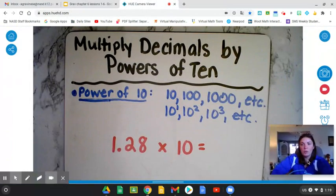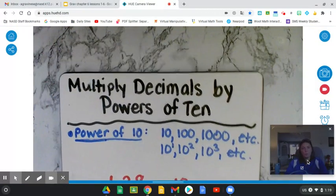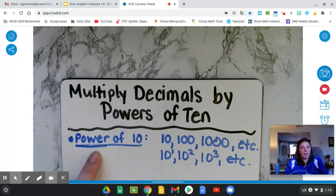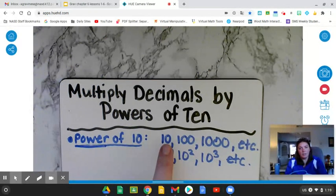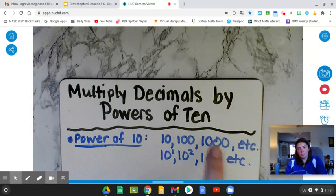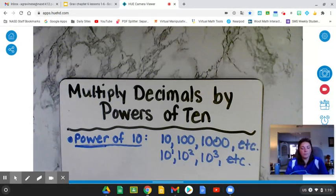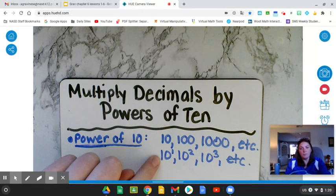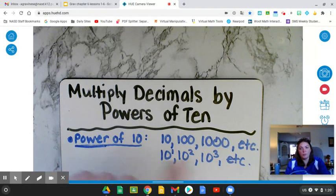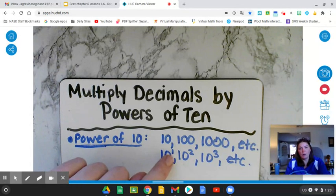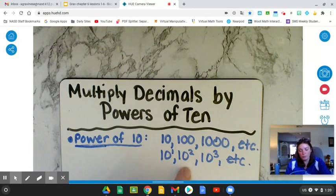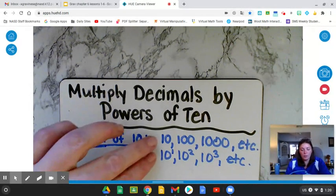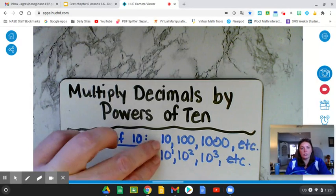Alright, so first I want to go over what it means to be a power of 10. So powers of 10 would include numbers such as 10, 100, 1000, etc. In other words, if we look at a power, the base is going to be 10 and your exponent could be any number. So 10 to the first power, 10 to the second power which is 10 times 10 or a hundred, 10 to the third power, etc. So these are powers of 10.